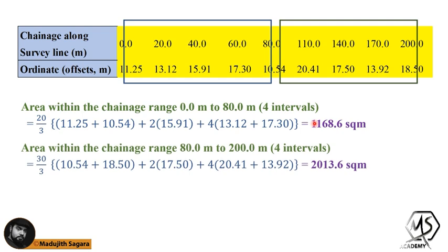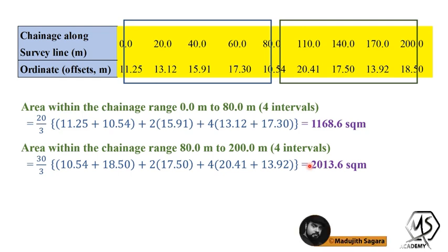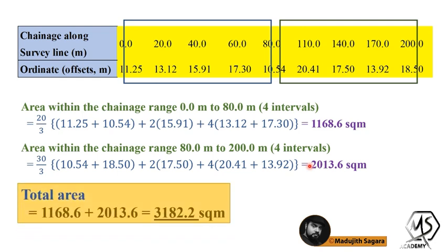For the range 80 to 200 meters — also four intervals — the only difference is the strip distance is 30 meters. You can see the first ordinate, last ordinate, the third ordinate, the second ordinate, and the fourth ordinate identified accordingly. The final answer for this section is 2013.6 square meters. Then you sum these together and get the final answer: 3182.2 square meters.